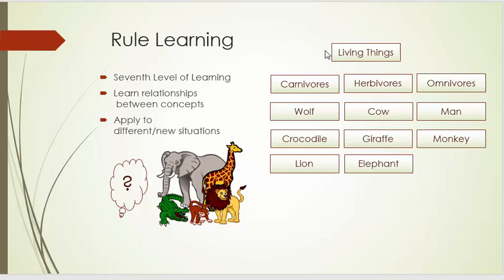Living things, carnivores: wolf, crocodile, lion. Living things, herbivores: cow, giraffe, elephant. Living things, omnivores: man and monkey.